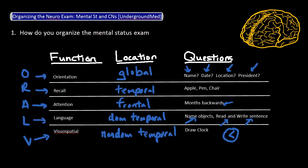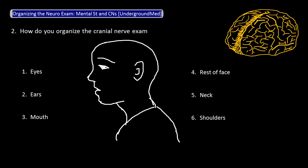After the mental status exam, the next piece of the neuro exam I like to perform is the cranial nerve exam. In practice, you may find it easier to approach this by anatomy rather than by cranial nerve number. I like to go in this order: eyes, ears, mouth, rest of the face, neck, and lastly, shoulders.